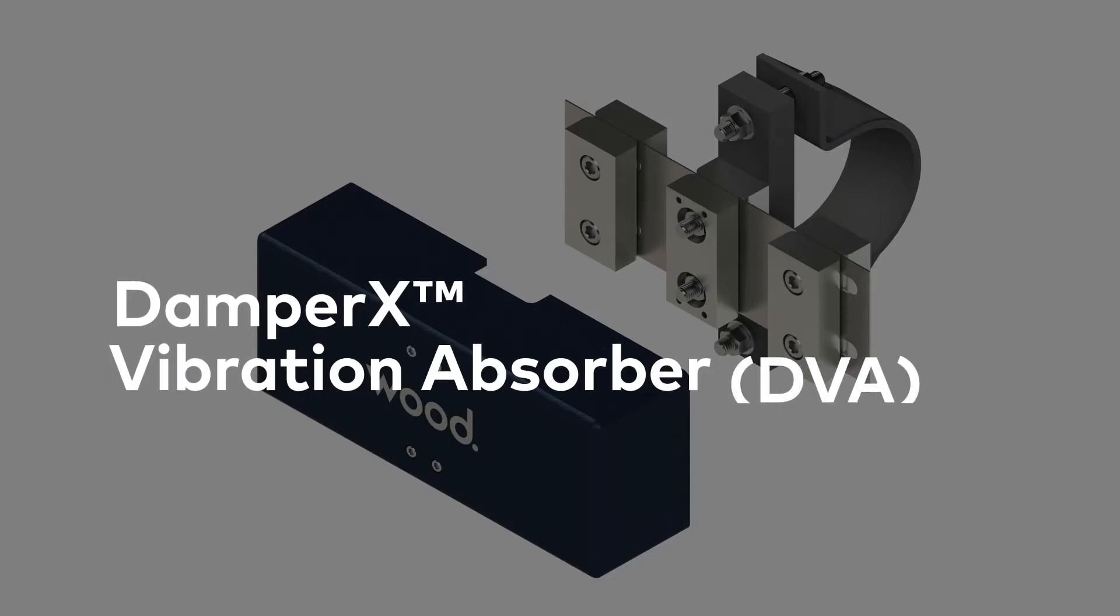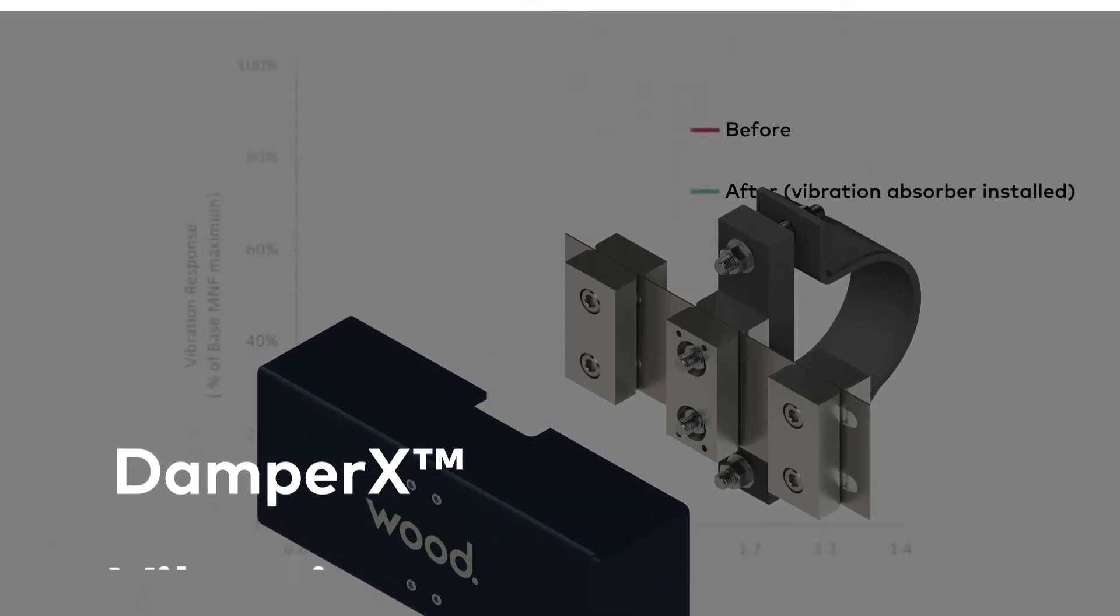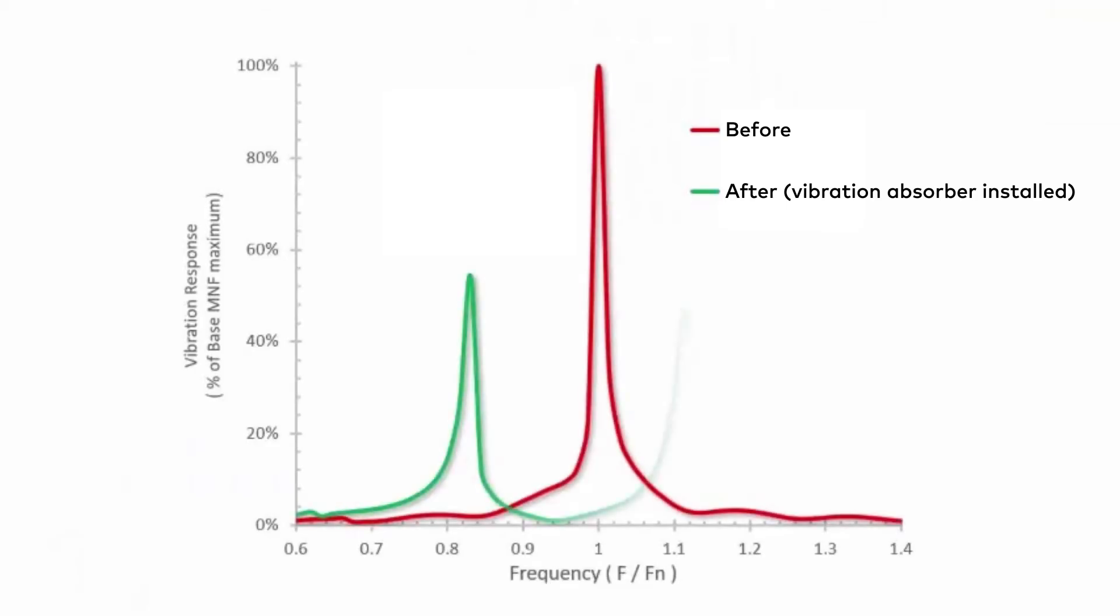Woods Damper X vibration absorber is just such a device. Our standard DVA typically produces 40 to 50 percent reduction in vibration off base levels, and for a good many of the piping and vessel vibration problems we see, that's all that's needed.